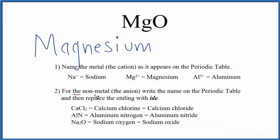Then we write the name for the nonmetal. So for oxygen, we write O, it's lowercase o. And then we'll replace the ending, the ygen, with ide.